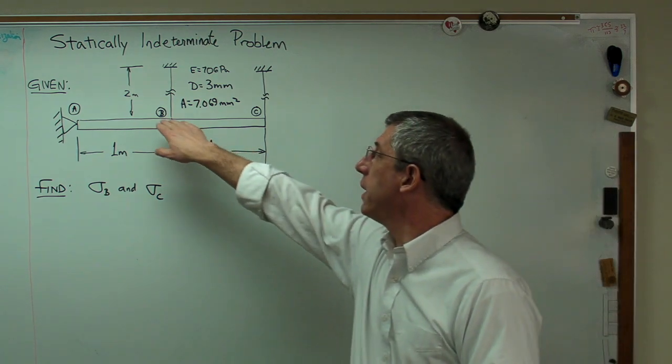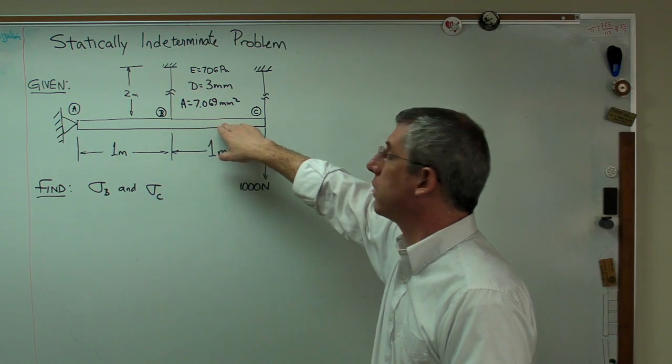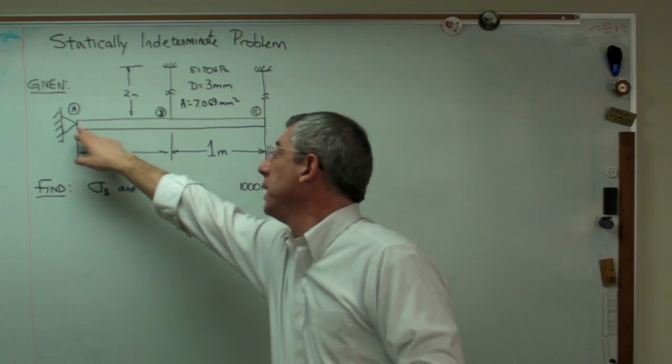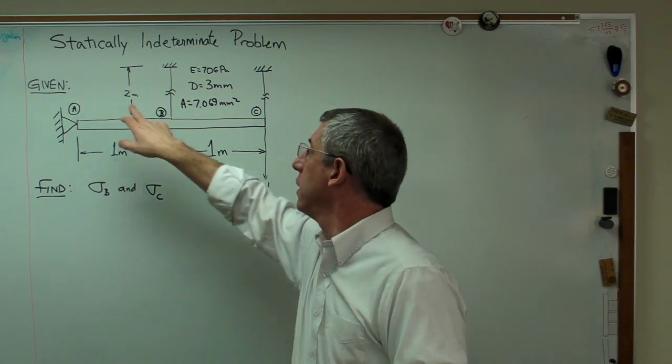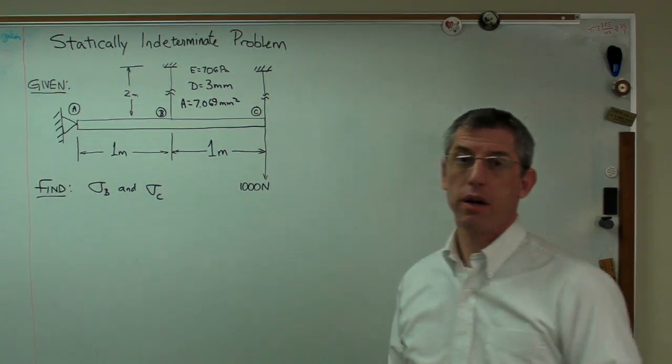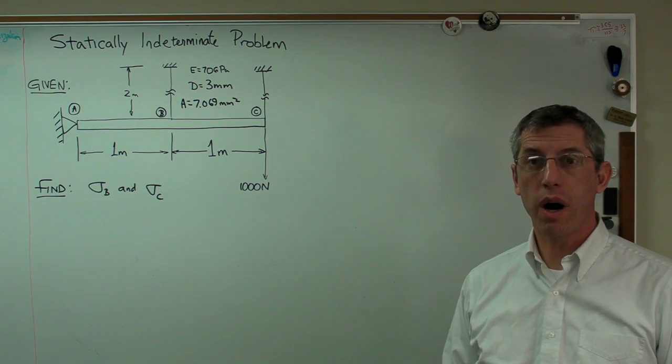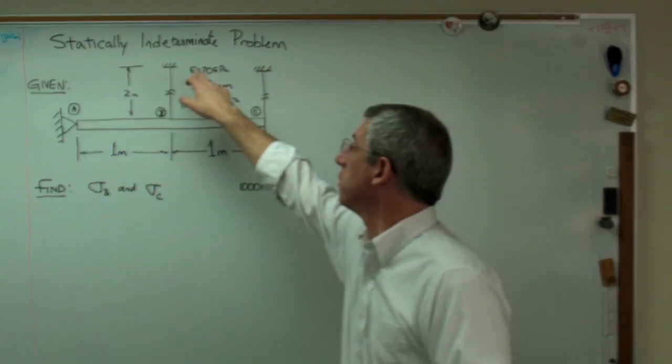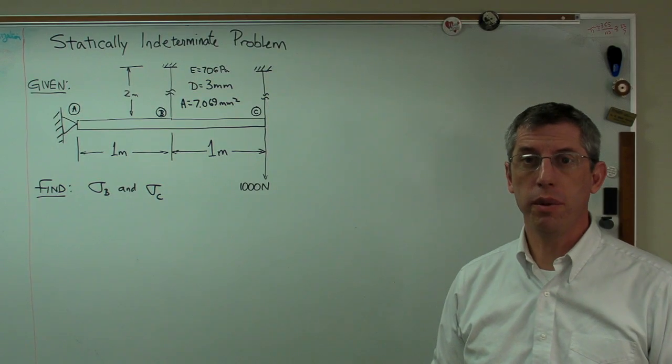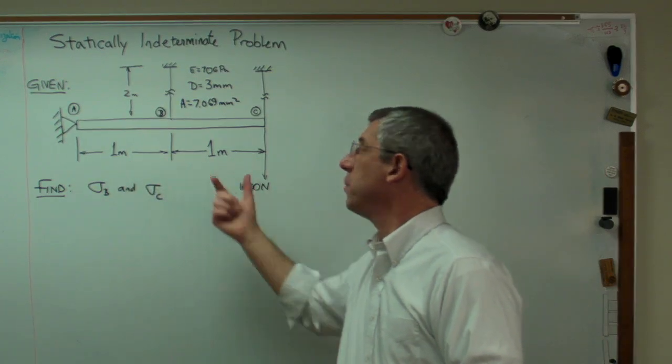If you look at the problem I've got written on the board here, there's a horizontal bar that's pinned at the left end, point A. Points B and C are being supported by solid wires. These are aluminum wires that are fixed at the top, and they're two meters long. The wires are one meter apart.